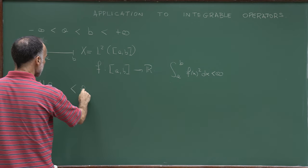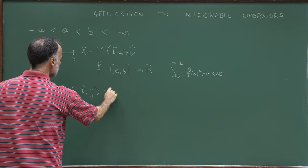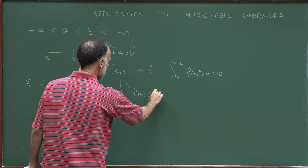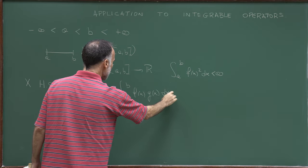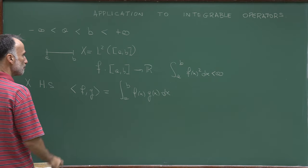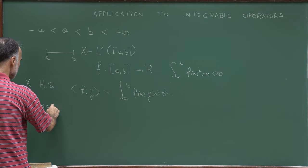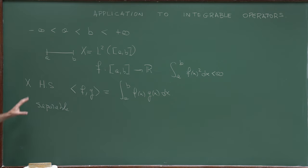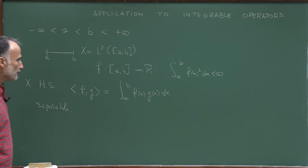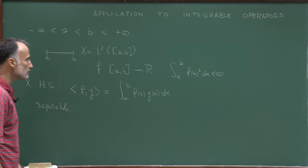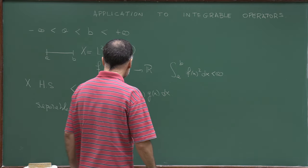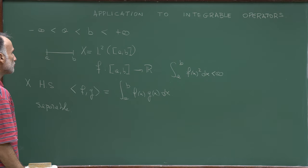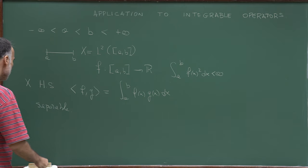The scalar product will be given by the integral from a to b of f(x)g(x) dx, and it is a separable Hilbert space. So we are exactly in the framework of the previous lectures. We will define a linear operator in this space which will be symmetric and compact.